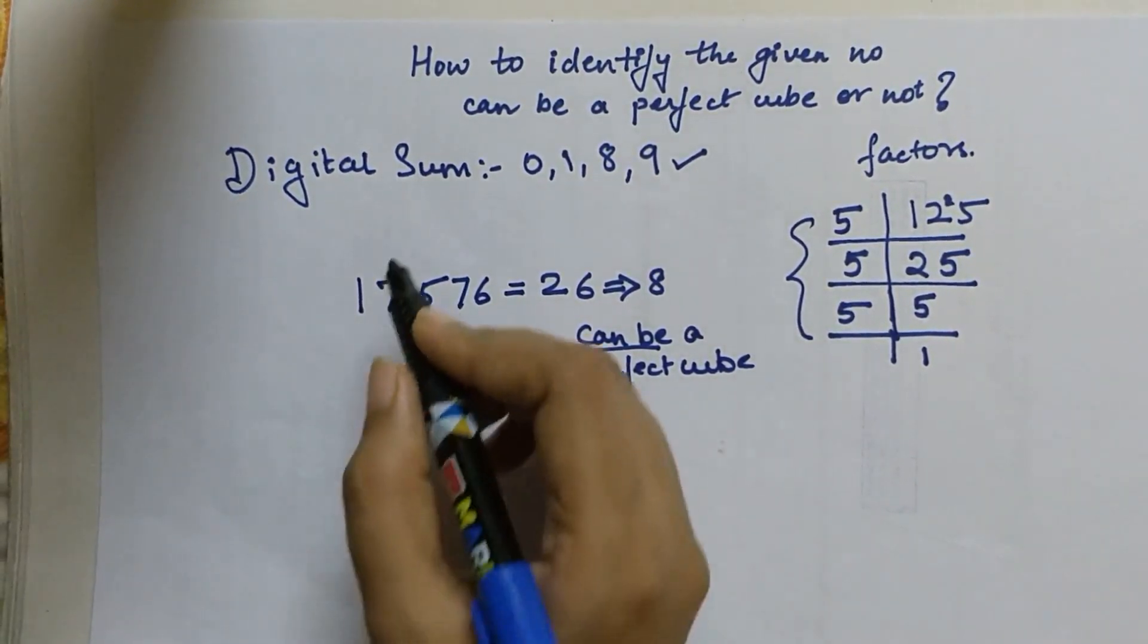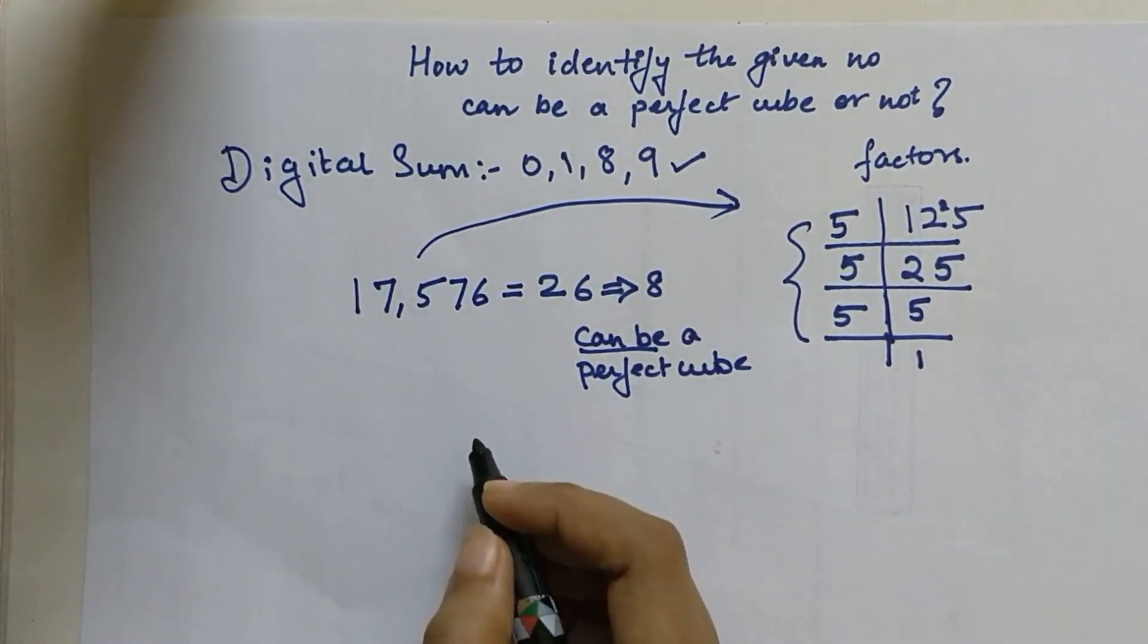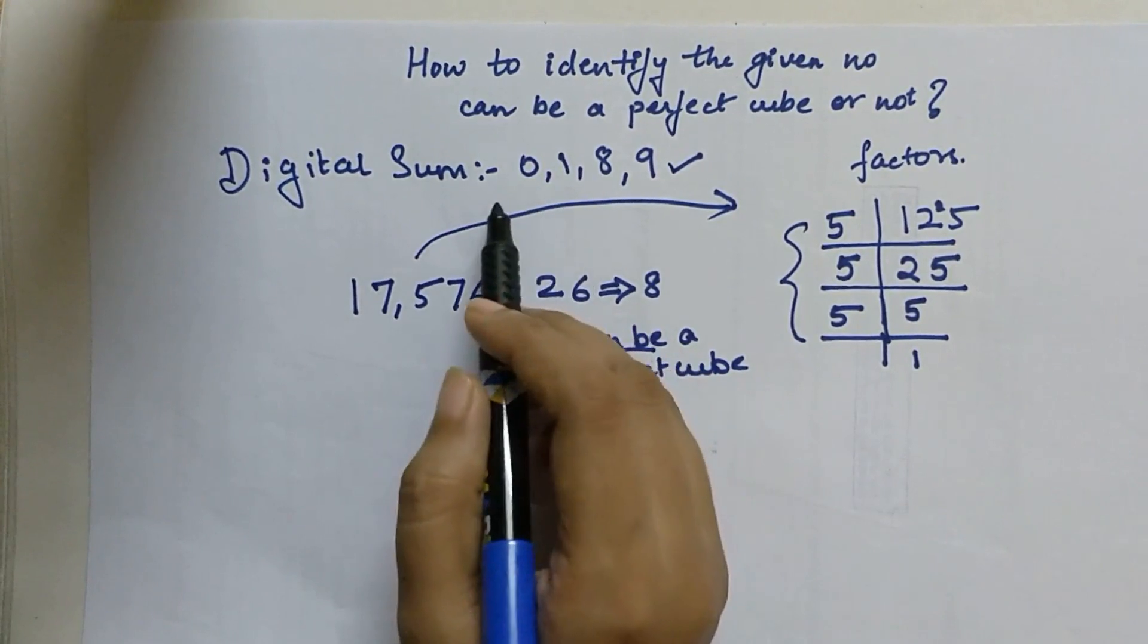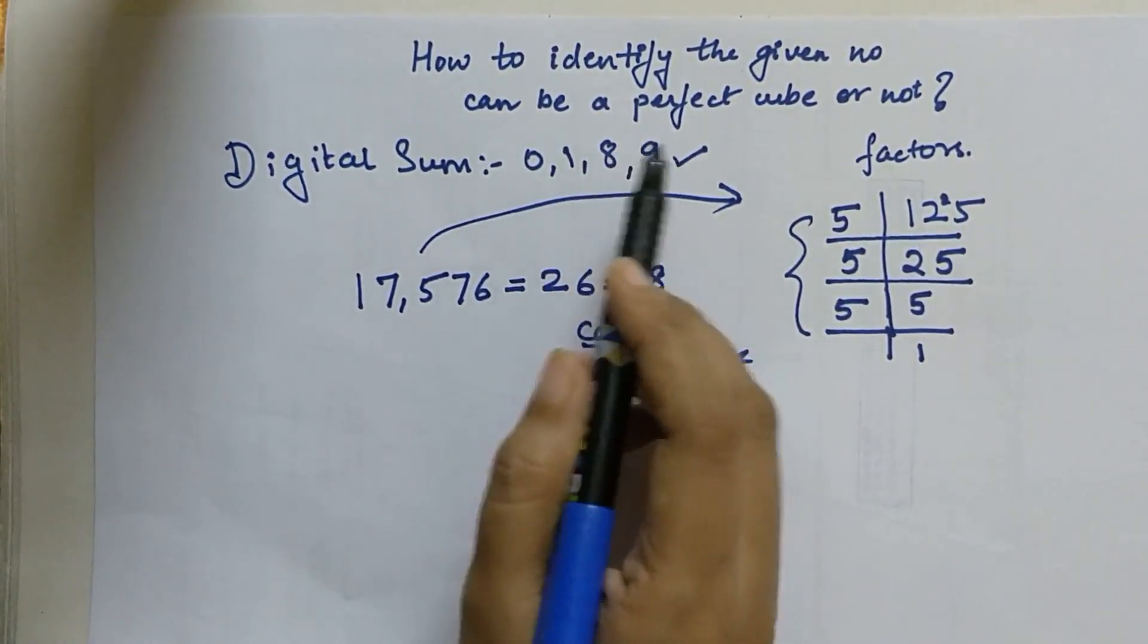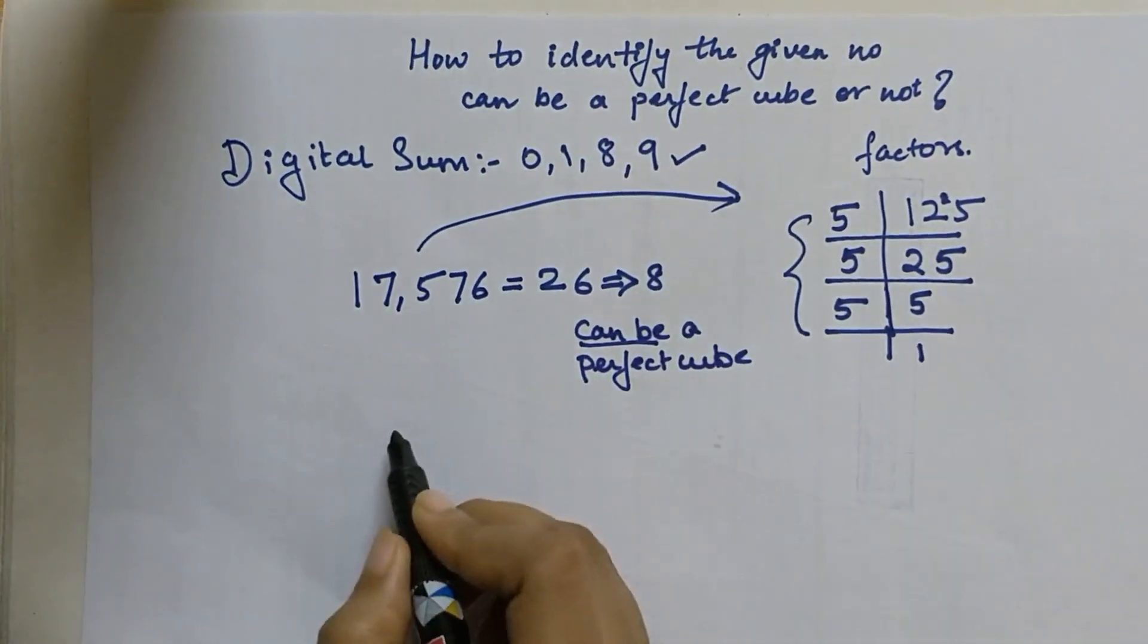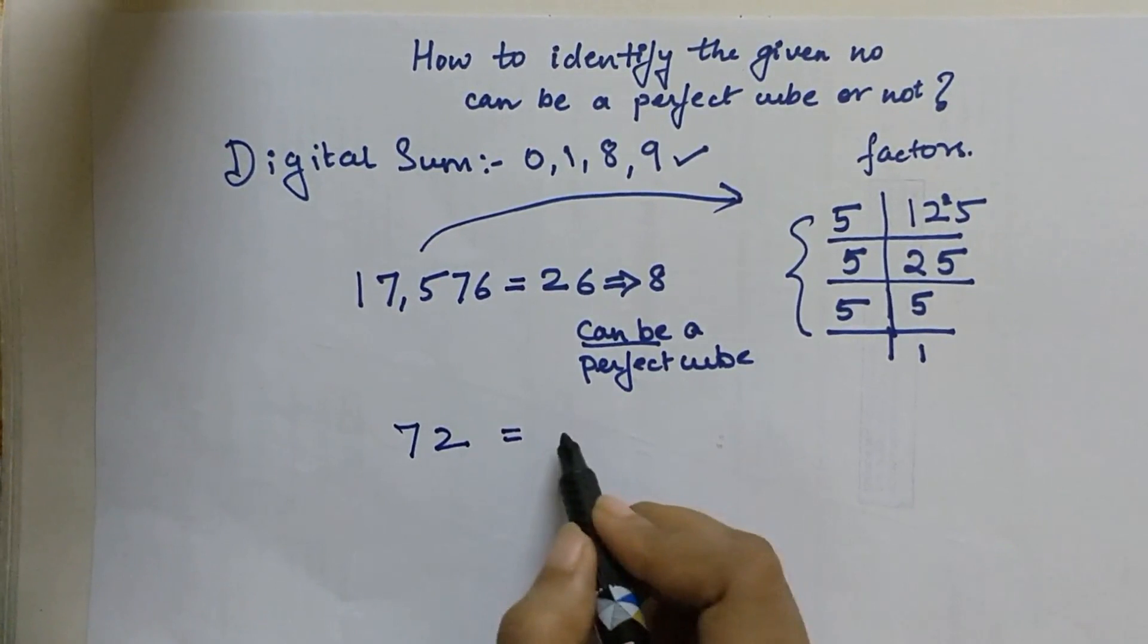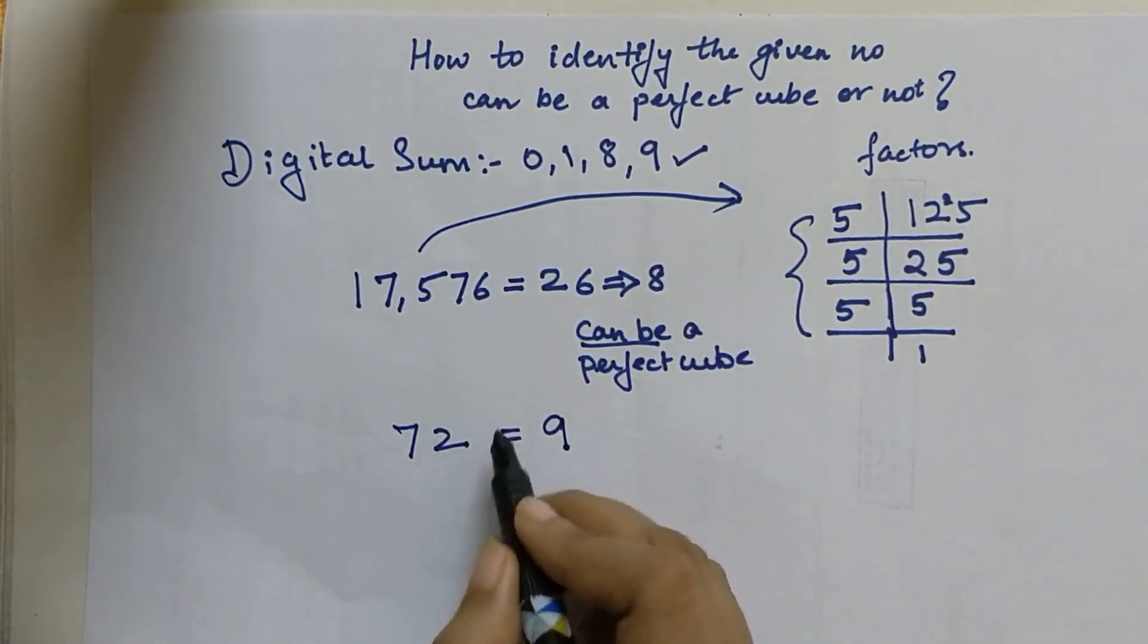For that you will have to use the method of factorization. I will show you certain numbers whose digital sum lie in any of these numbers but it will not be a perfect cube. Let us take for example 72. The addition of 7 and 2 gets us 9, but we all know that 72 is not a perfect cube.